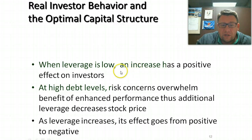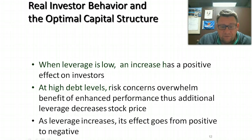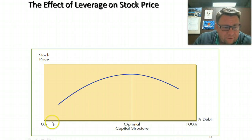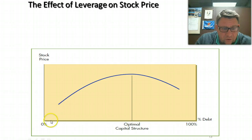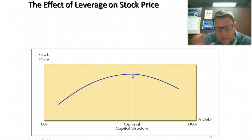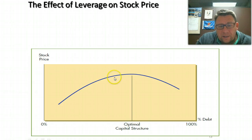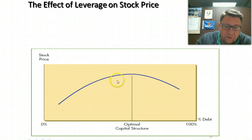When we have low leverage, increasing leverage has a positive effect on investors. When we have high debt levels, adding more debt puts a lot of pressure on the organization and could move investor opinion from positive to negative. Looking at this graph from zero to 100% debt, stock price reacts on a curve. At some point there is the optimal capital structure — the right amount of debt to equity to maximize our stock price. Less than that, we haven't maximized it; more than that, we've taken on too much debt. So we're either under-levered or over-levered.